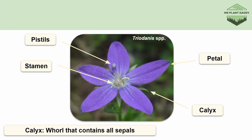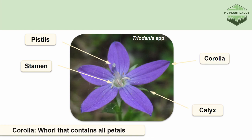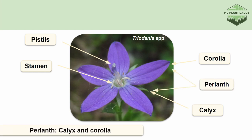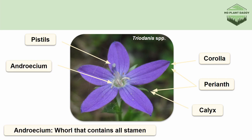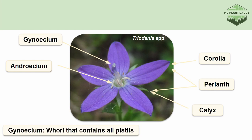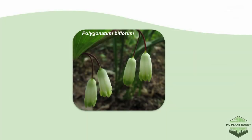If you wanted to refer to all the sepals on a flower you would refer to it as a calyx, which is the whorl for sepals. The corolla is the whorl for the petals. If you wanted to refer to both the corolla and the calyx at the same time, you would refer to all of the petals and all of the sepals as the perianth. The third whorl of a flower is the androecium, which contains all of the stamens, whereas the fourth whorl is the gynoecium and it contains all of the pistils or carpels. To recap: the calyx contains all of the sepals, the corolla contains all of the petals, the androecium contains all of the stamens, and the gynoecium contains all of the pistils or carpels.